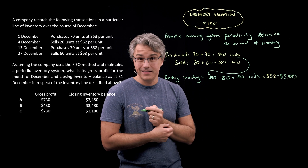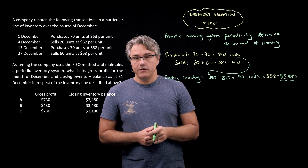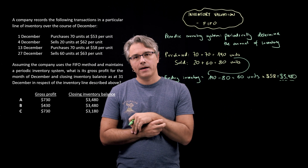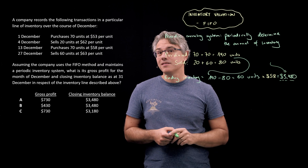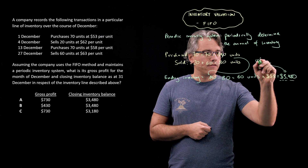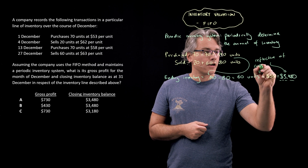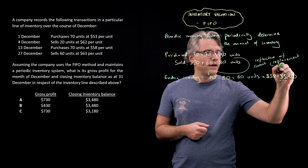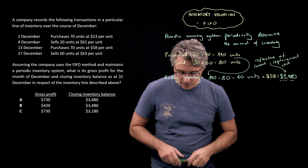Let's calculate: 60 times 58 gives $3,480 — that's our closing inventory balance. Just in case you're asked such a question in the exam: a company following the FIFO method, in terms of displaying its closing inventory balance on the balance sheet, will show a value based on the most recent prices at which purchases were made. This makes it reflective of current replacement cost — that's one of the key benefits of using FIFO. What you show on the balance sheet is pretty close to the current cost of replacing those inventory items.